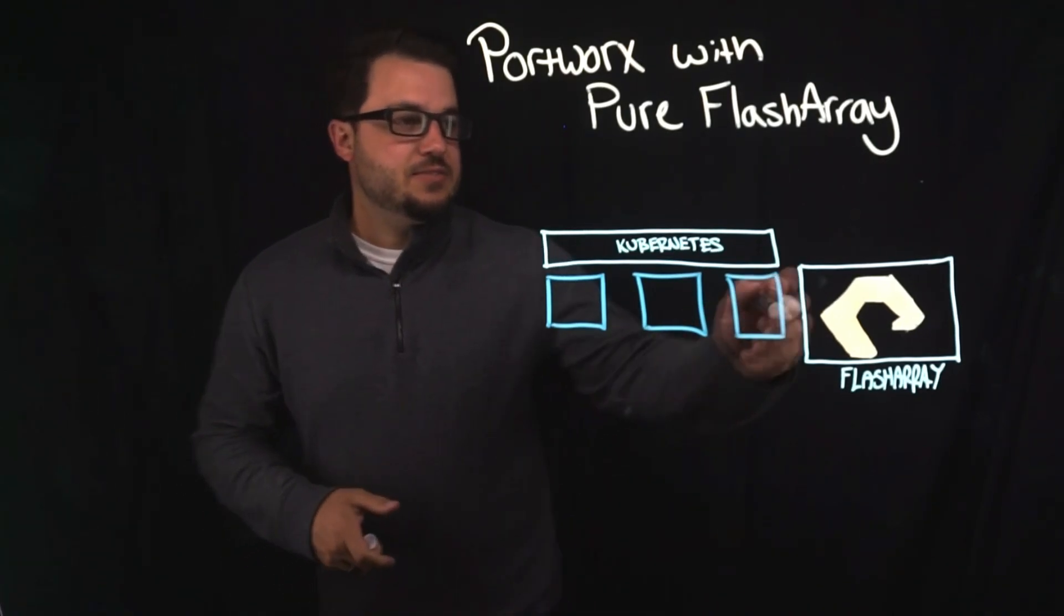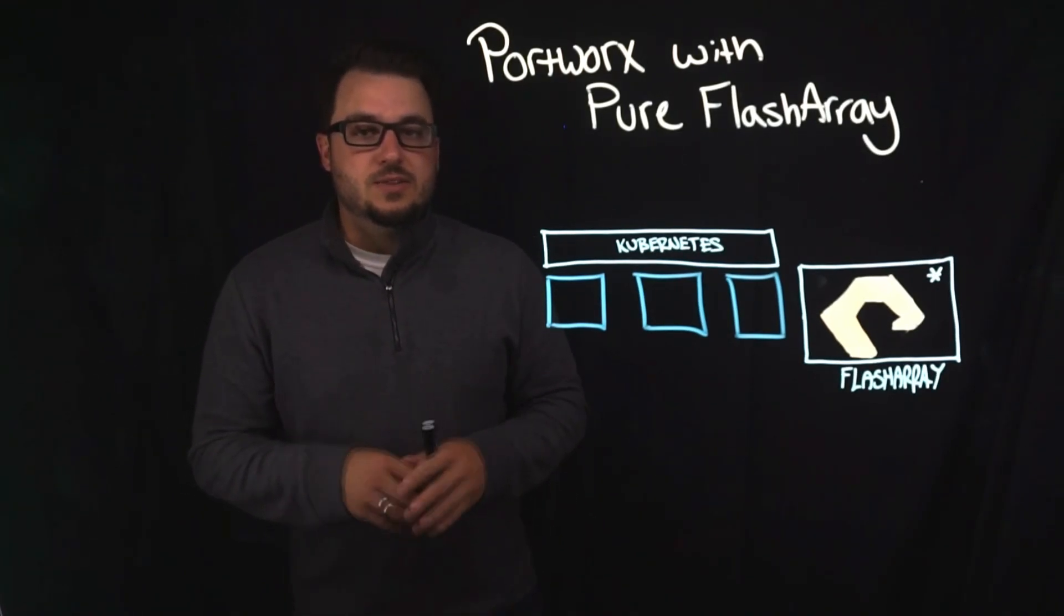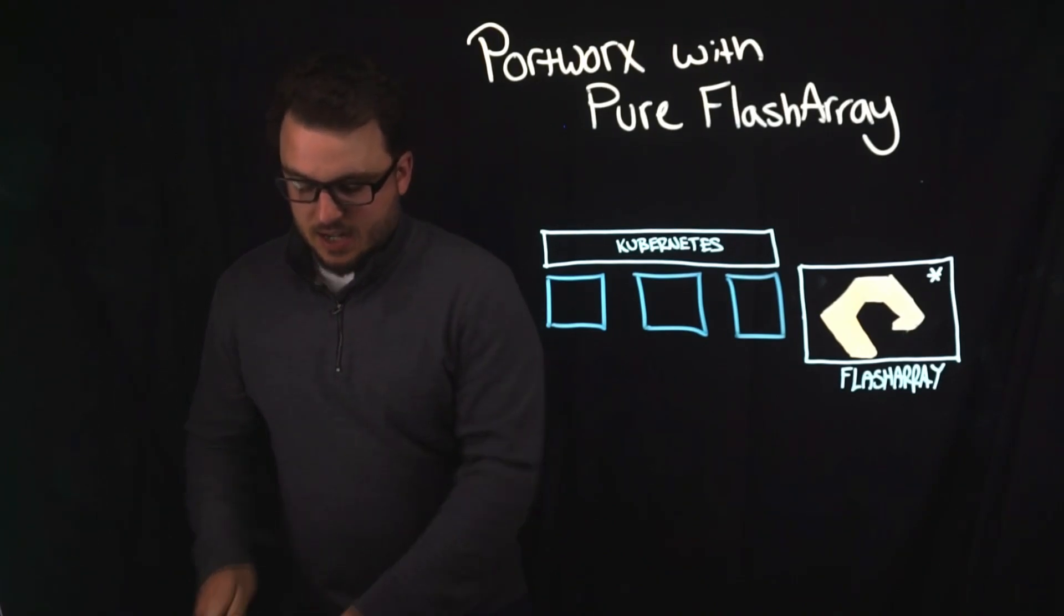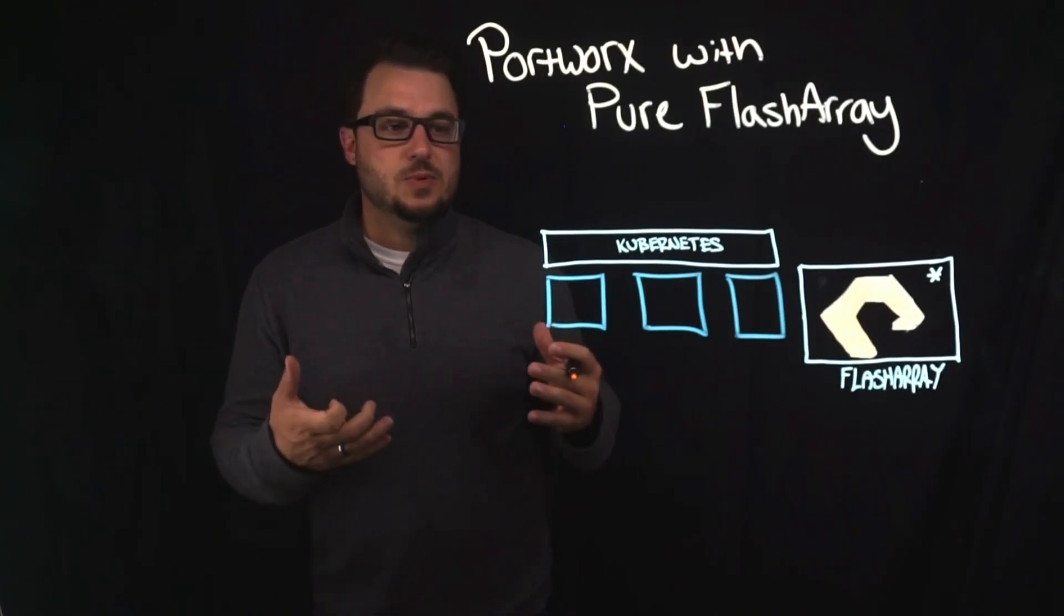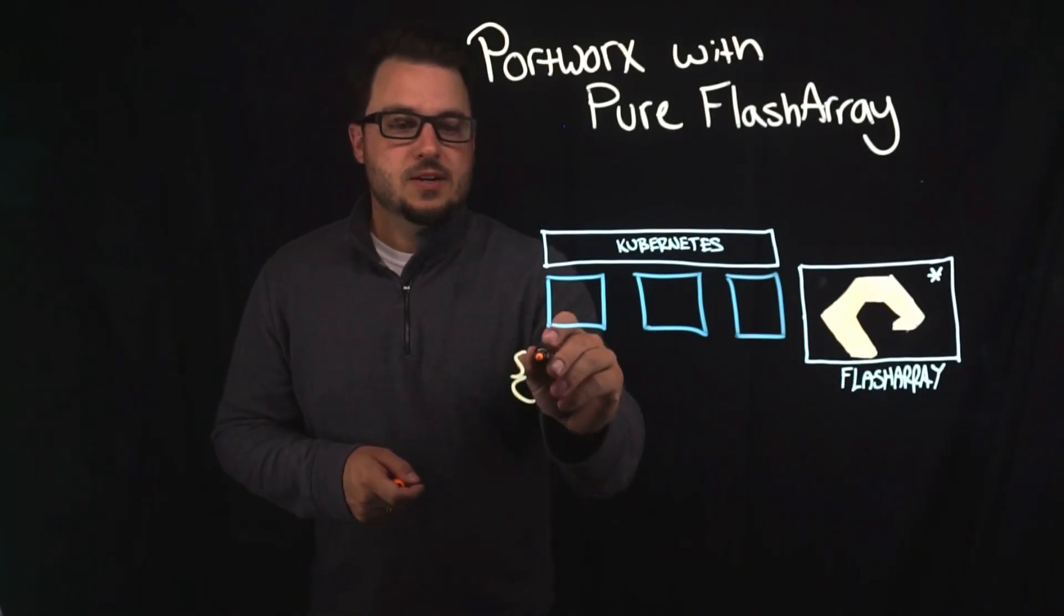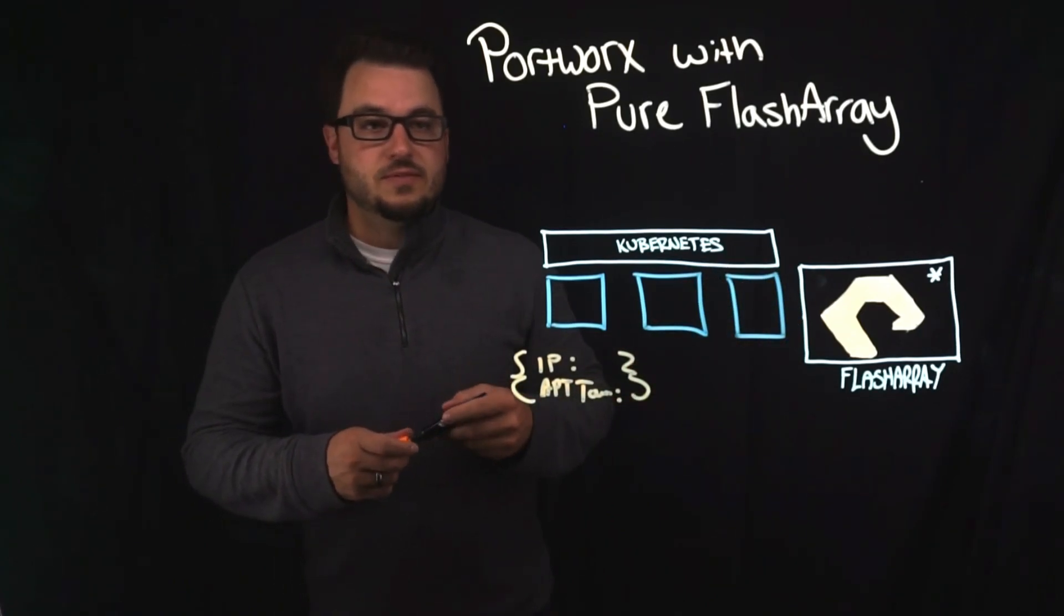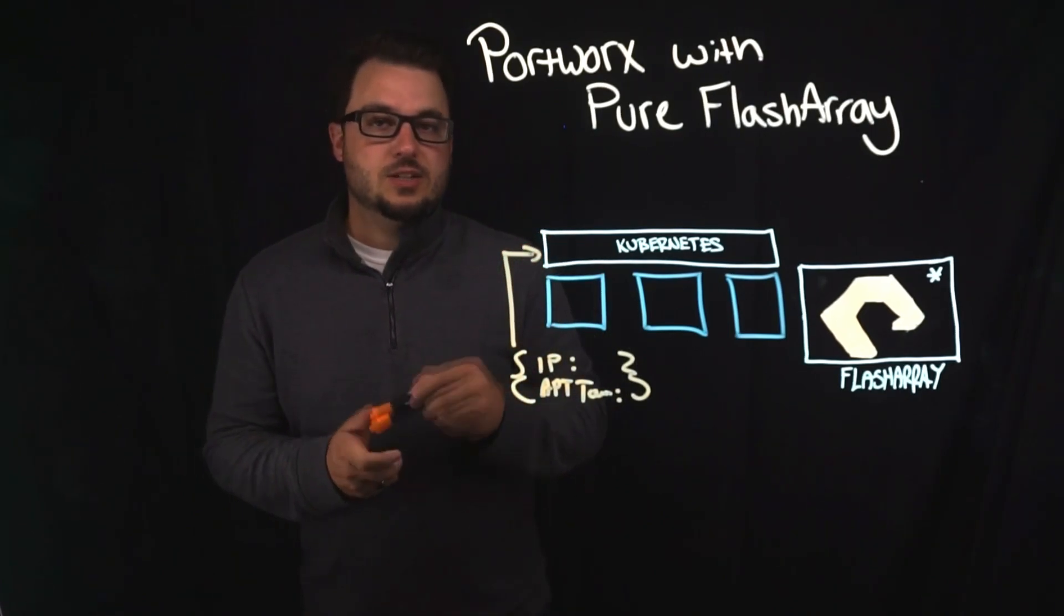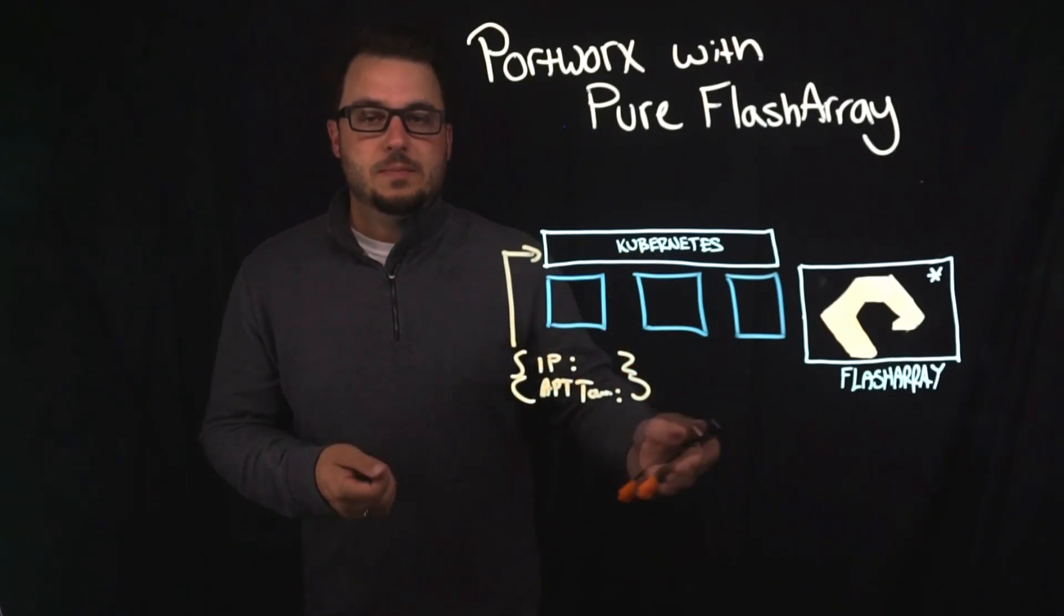So if you already have a flash array in your data center, you may be wanting to use Kubernetes, you may be wanting to use Portworx on Kubernetes. Well, the good news is that you can use these technologies together, and there are some really great benefits to it. What you need to do first to actually get things working together is create a JSON file, which gives the IP and API token information for your flash arrays. Once you have this JSON file, it's applied to your Kubernetes cluster as a secret in the kubesystem namespace. That sets up the availability of your pure equipment for Kubernetes.